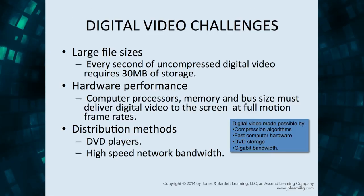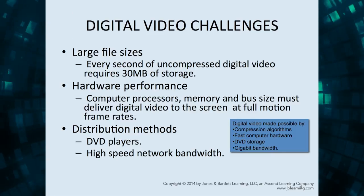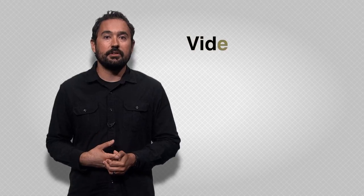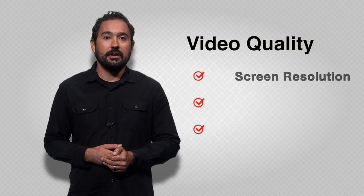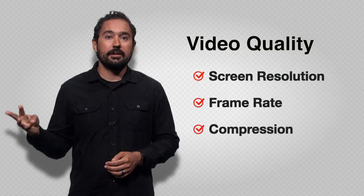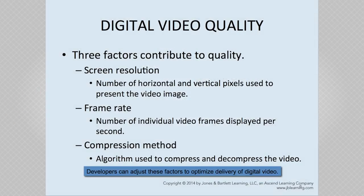You see this type of digital video content delivered via new streaming services such as Netflix and Hulu. Digital video quality relies on three factors: screen resolution, frame rate, and compression methods. Screen resolution determines the number of horizontal and vertical pixels used to present the video image, which determines how large the video will appear to the user.